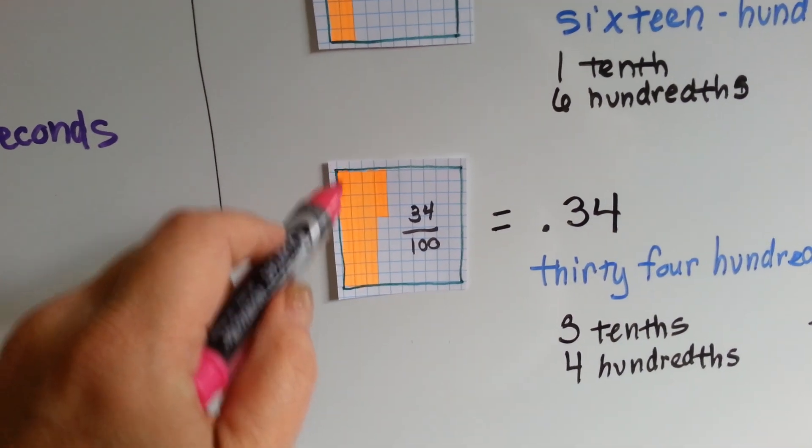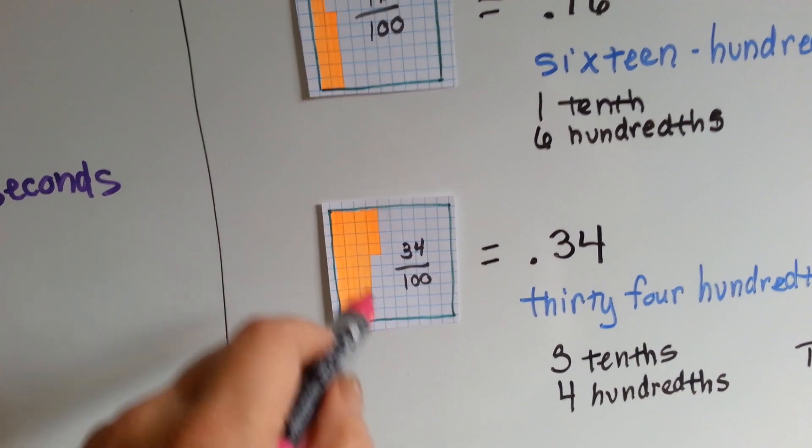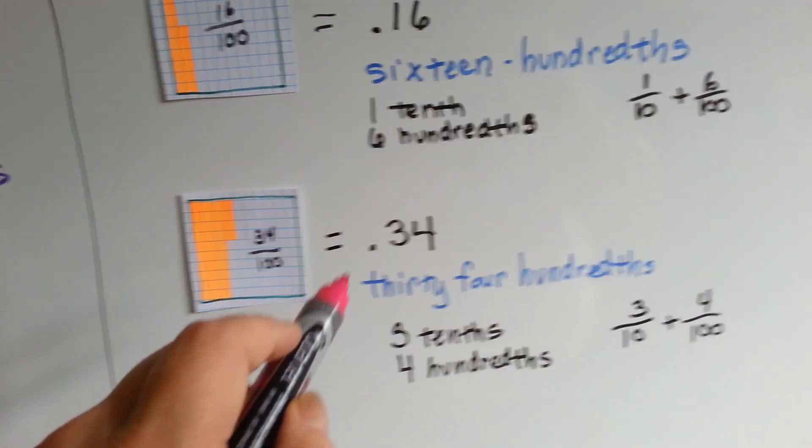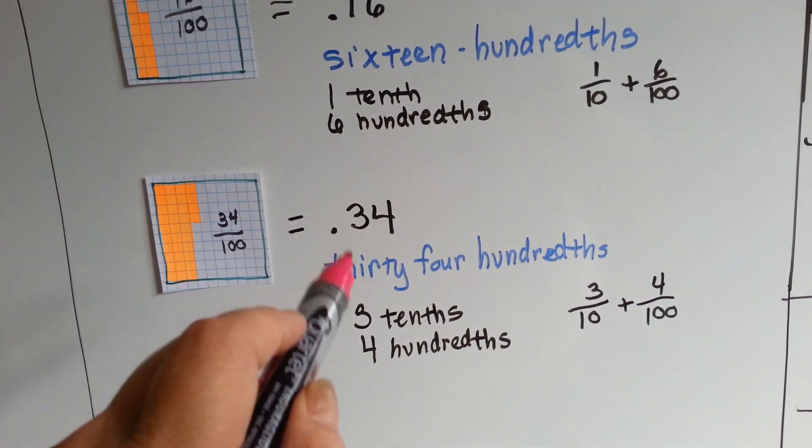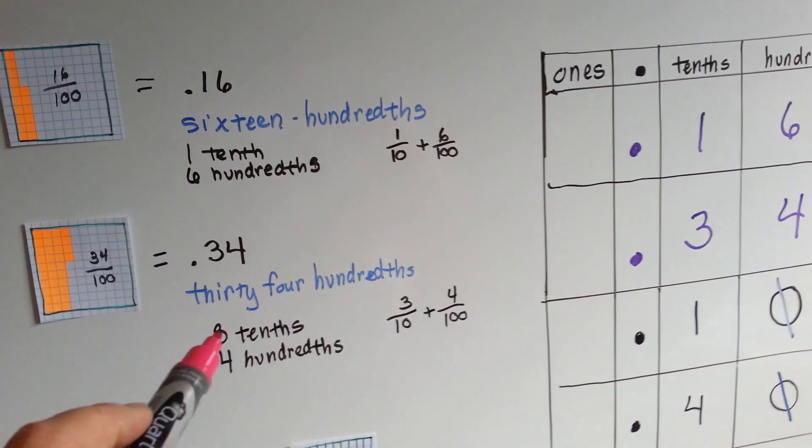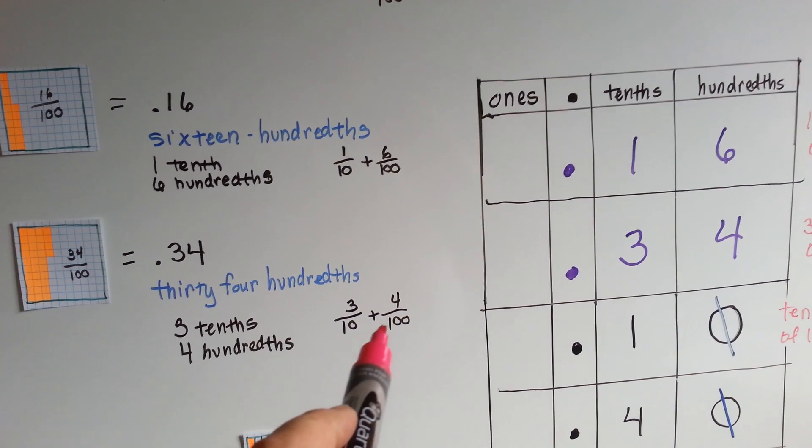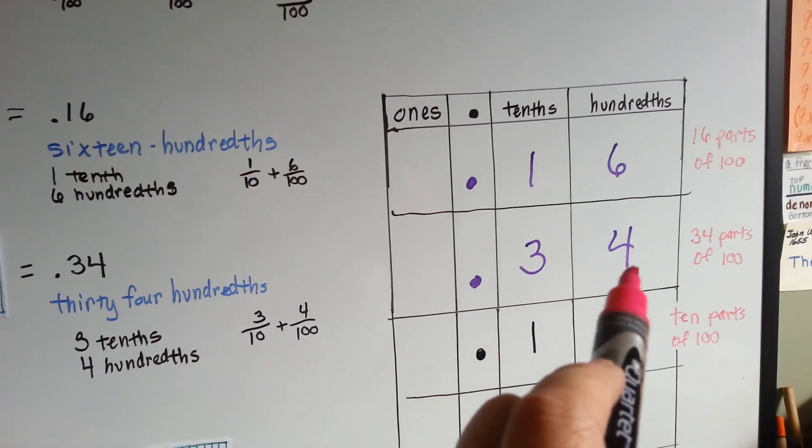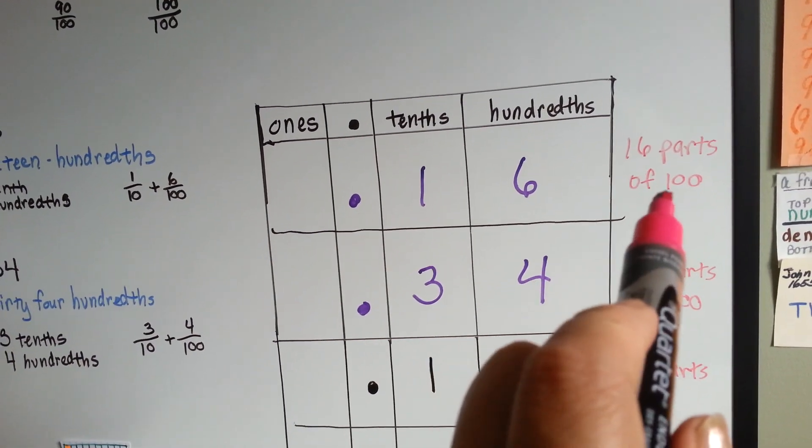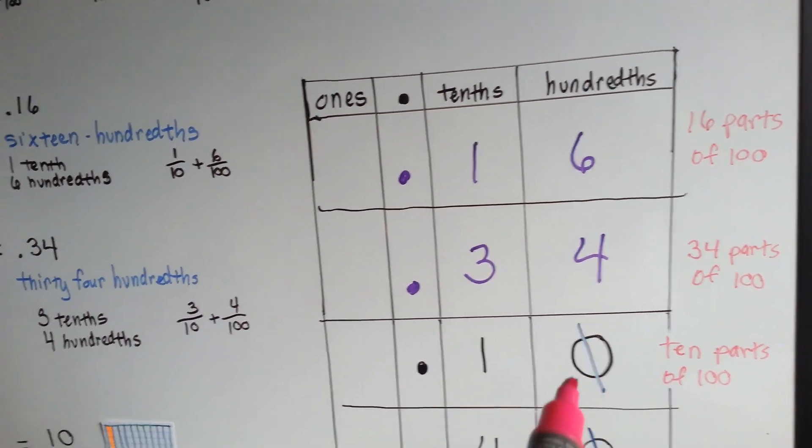Right here we have ten, twenty, thirty, and four that are orange out of the whole hundred. So thirty-four one hundredths are colored orange. It's point three four or thirty-four hundredths. It consists of three tenths and four hundredths. Three tenths plus four hundredths makes thirty-four hundredths. The sixteen hundredths is sixteen parts of a hundred. The thirty-four hundredths is thirty-four parts of a hundred.